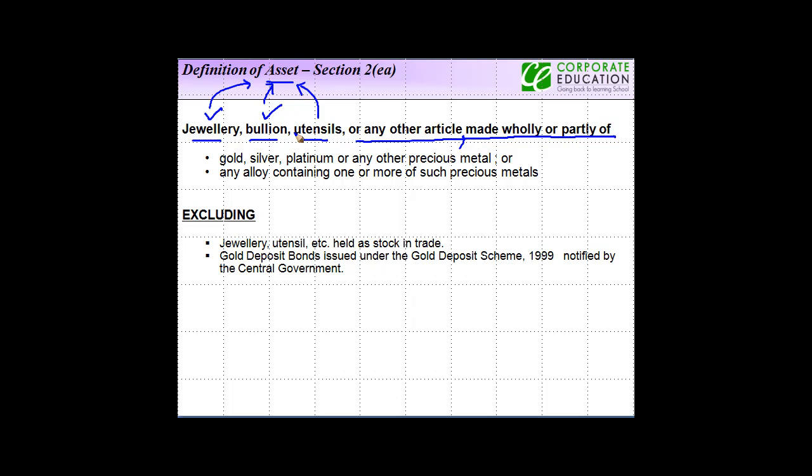So if these articles, whether it be one, two, three, or any other article which is made partly or wholly of the following, that has to be included within the definition of asset. The first one is gold, silver, platinum or any other precious metal. So if you have jewellery which is made of gold, jewellery which is made of silver, jewellery which is made of platinum, or jewellery which is made of any other precious metal, that is going to be included within the definition of asset. So each of these terms go along with all the four of these articles.